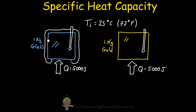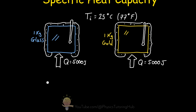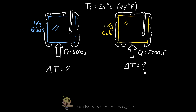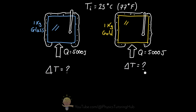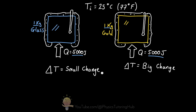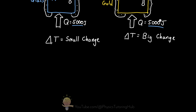We've placed some insulation around both our blocks to make sure that the heat we transfer into these blocks doesn't leak out. When we first think about this problem, we might believe that because we've given both substances the exact same amount of heat, and they both have the same mass, intuitively it would seem that both substances should raise their temperature by the same amount. But rather paradoxically, we find that the gold's temperature has risen much higher than that of the glass. The reason for this all comes down to something called the specific heat capacity of a substance.